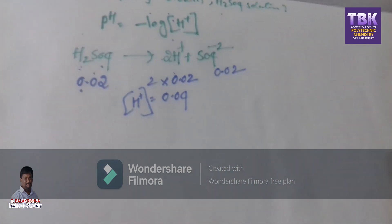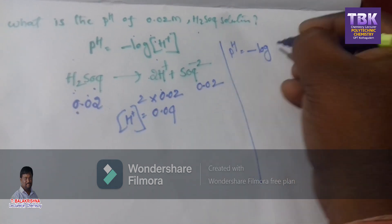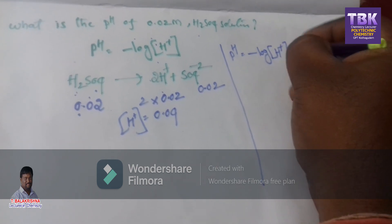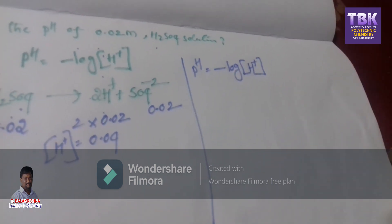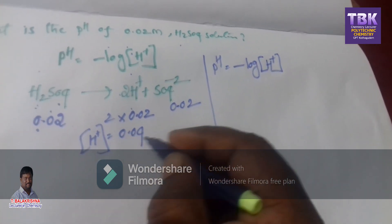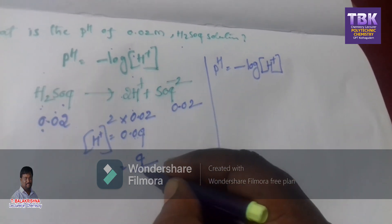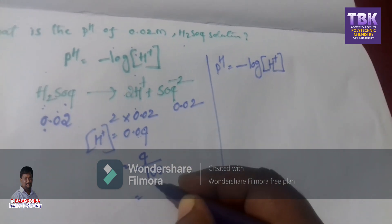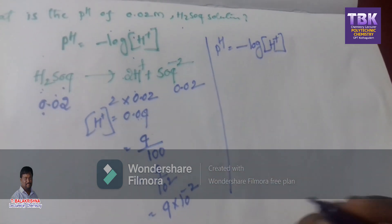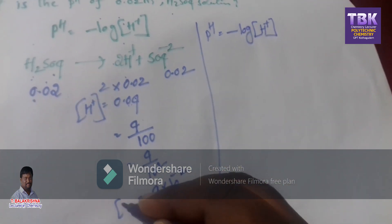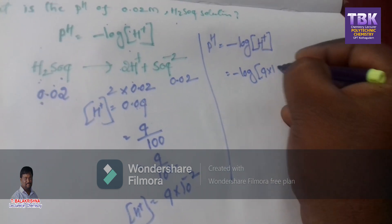Now come to the calculation part. pH = minus log of concentration of H⁺ ion. Substitute the value: 0.04 is converted to 4/100 = 4/10² = 4 × 10⁻². So, pH = minus log of 4 × 10⁻².